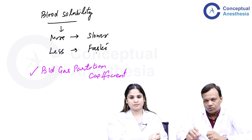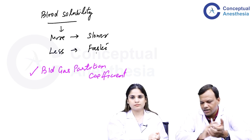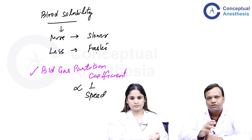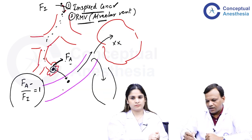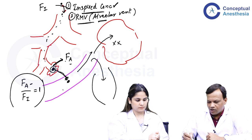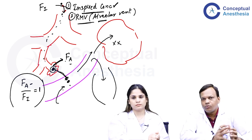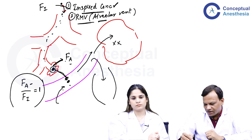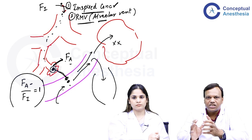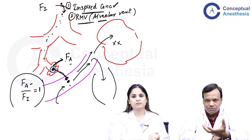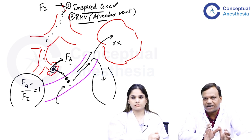To summarize: MAC is inversely related to potency, and blood-gas partition coefficient is inversely related to speed of onset — more coefficient means slower onset, less coefficient means faster onset. After the drug comes into blood from the alveoli, it also depends on blood flow to the pulmonary circulation, which depends on cardiac output. If cardiac output is more, blood quickly carries away the drug and more time is taken to reach equilibrium. In patients with low cardiac output such as those with cardiac problems, the anesthetic may produce faster onset than expected.